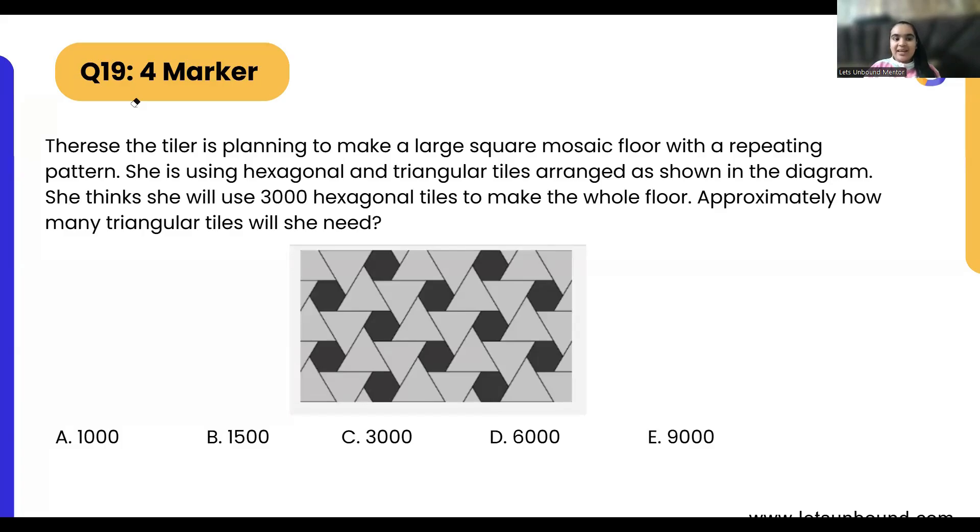Therese the tiler is planning to make a large square mosaic floor with a repeating pattern. She is using hexagonal and triangular tiles arranged as shown in the diagram. Now we can see over here we are having triangular tiles and hexagonal tiles. She thinks she will use around 3000 hexagonal tiles to make the whole floor.